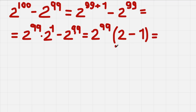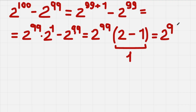So we have 2 minus 1 in the brackets, and we do the parentheses first in math. That gives us 1, and 1 times 2 to the power of 99 equals 2 to the power of 99. In the end we get 2 to the power of 99, and we leave it just like that because we will not multiply 2 out 99 times.